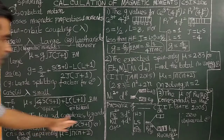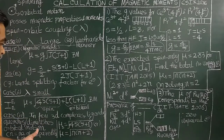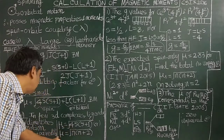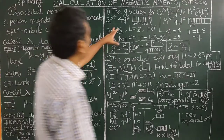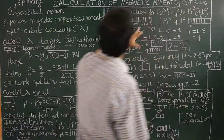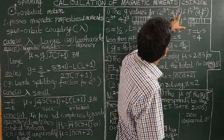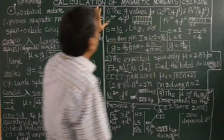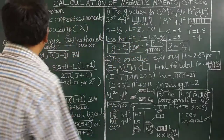For example, in CSIR 2016, a problem asked for the G values for Ce³⁺ (4f¹) and Pr³⁺ (4f²). G values are calculated using the Landé g-factor formula. For Ce³⁺, 4f¹ means there are 7 F orbitals with ml values −3, −2, −1, 0, 1, 2, 3. For Pr³⁺ (4f²), there are 2 unpaired electrons.